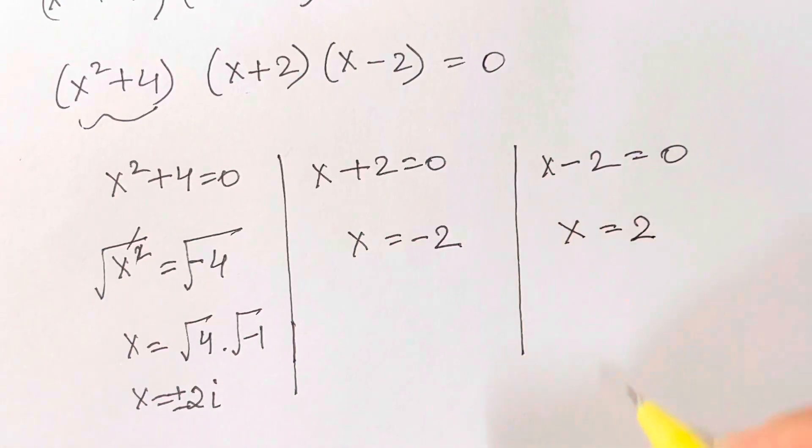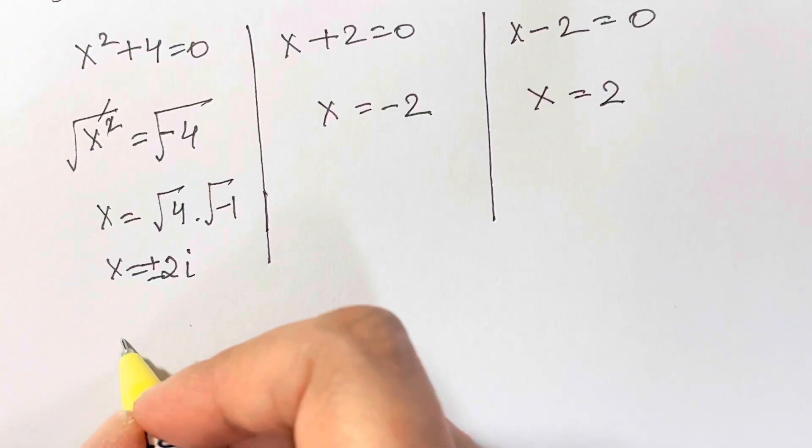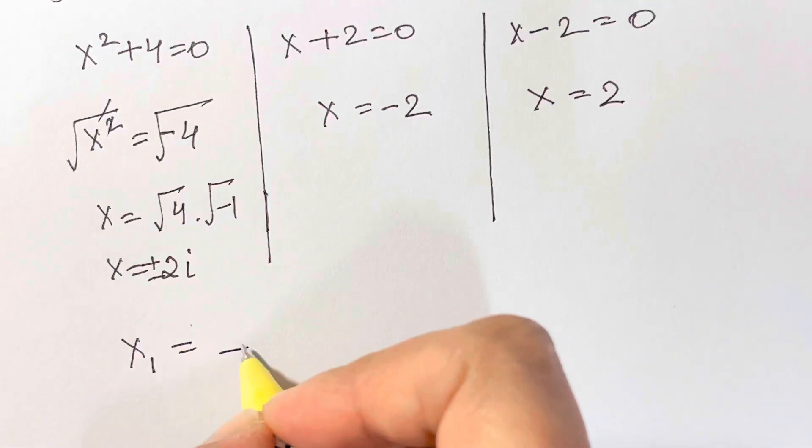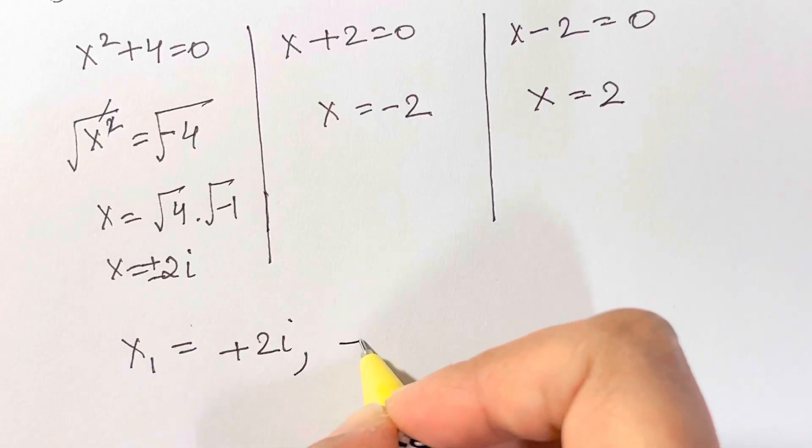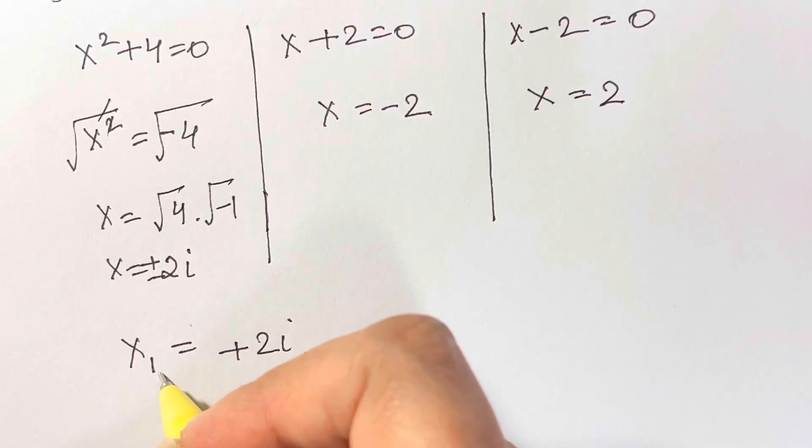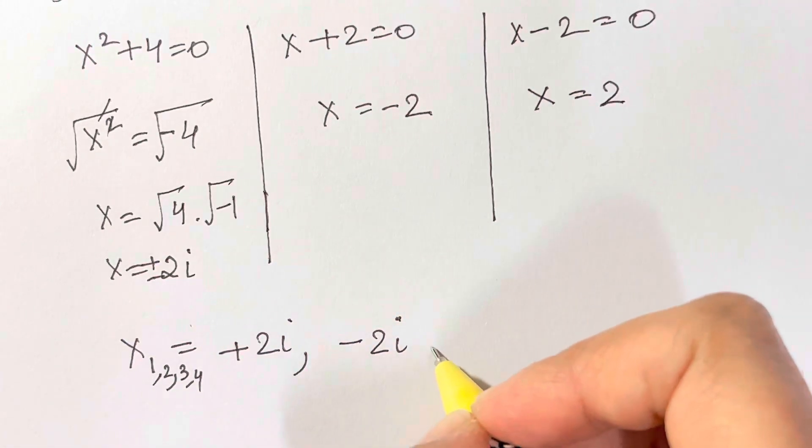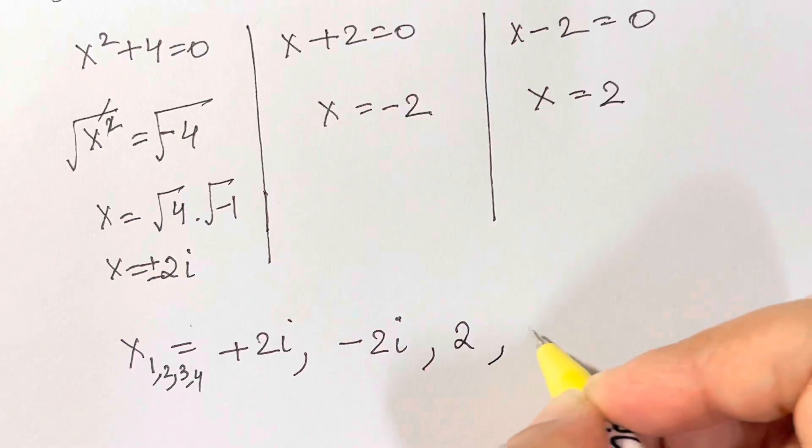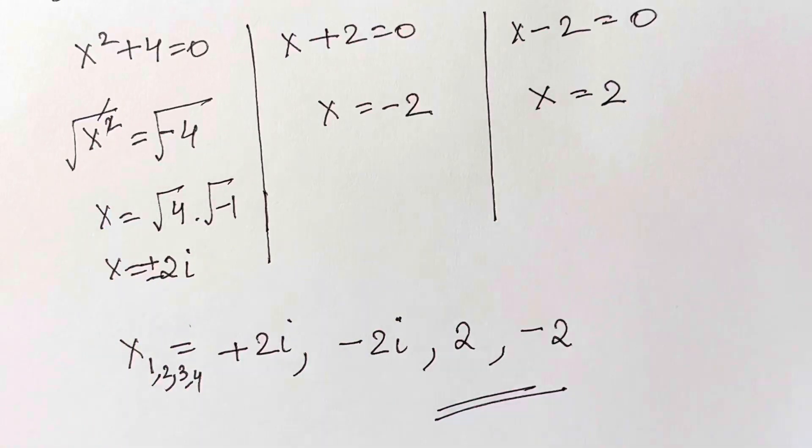So the four values for x are: plus 2i, minus 2i, plus 2, and minus 2. These are the four values of x. Thank you so much, bye-bye! Take care, and don't forget to subscribe.